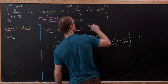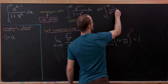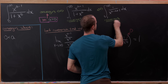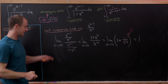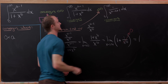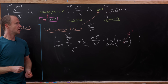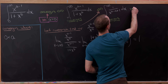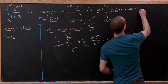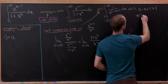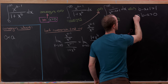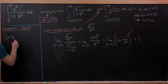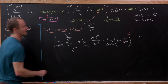The limit comparison test tells us our integral converges if and only if the corresponding integral with the simpler function converges: the integral from 1 to infinity of 1 over x to the b minus a plus 1 dx. By the p-series test from Calculus 2, this converges if and only if b minus a plus 1 is strictly bigger than 1, i.e. b minus a > 0, meaning b is strictly bigger than a.